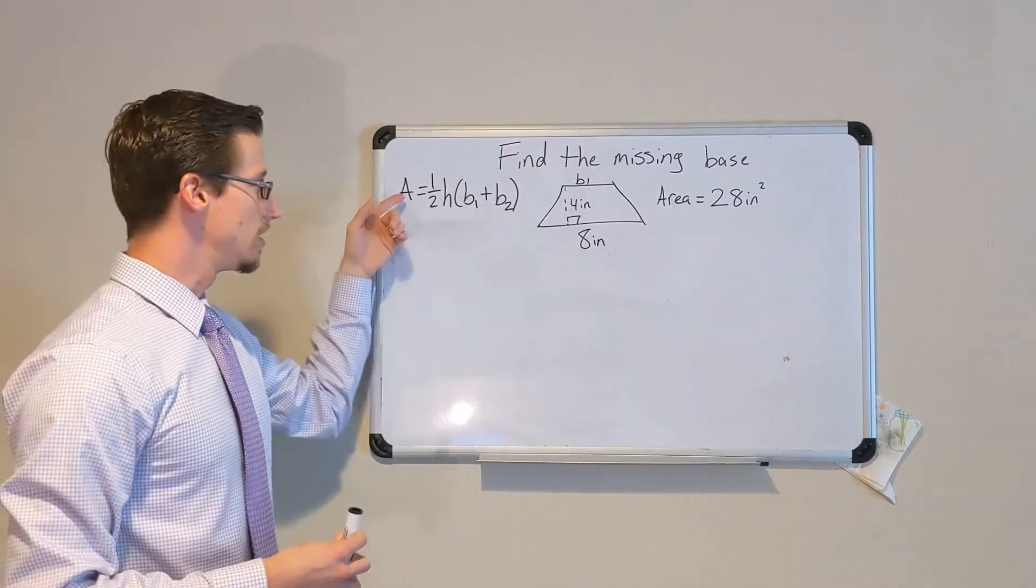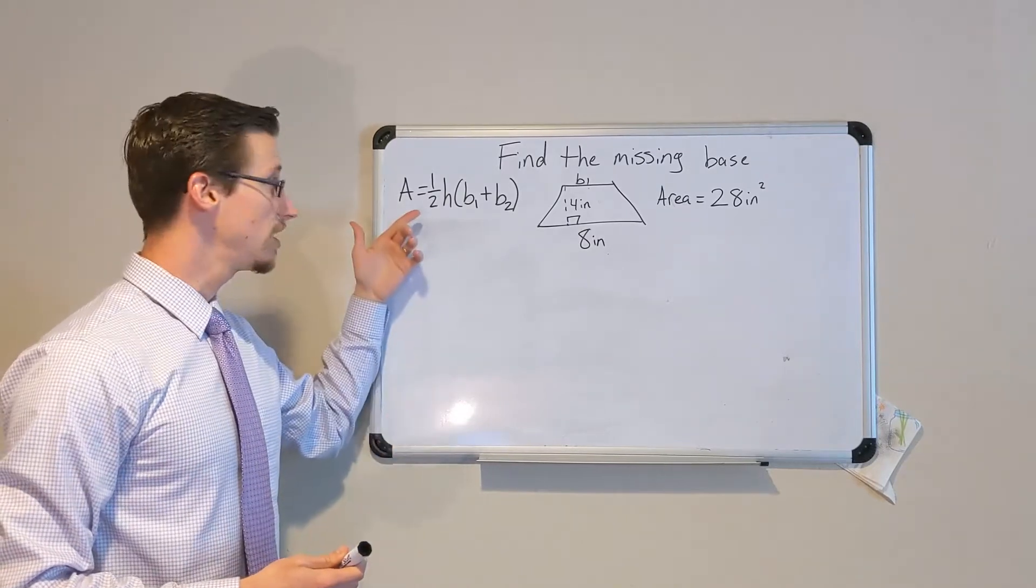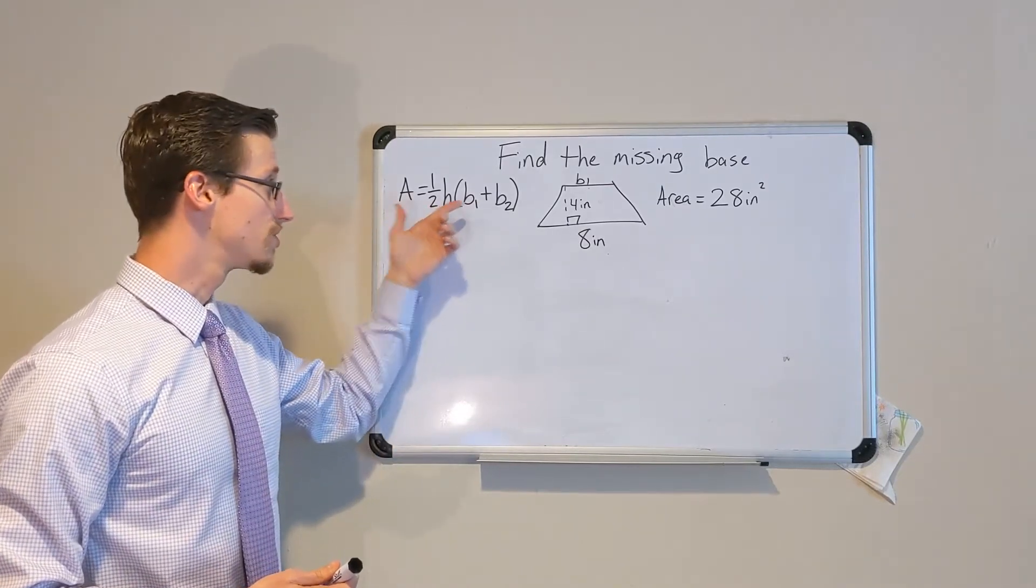The other thing we need to know in this problem is what is the area formula for a trapezoid, which is area equals one half of the height times the sum of the two bases.